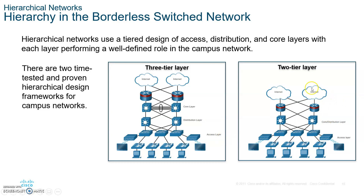There are two different types of designs: the three-tier layer design and the two-tier layer design. If you have a small network within the hundreds, you probably want to use a two-tier. A three-tier is for a very large network. They are always doubled for redundancy. We have the core layer where everything connects, and in a three-tier design, from the core layer you send data to a distribution device such as a Layer 3 switch, and from there you go to the access layer where your hosts actually connect.